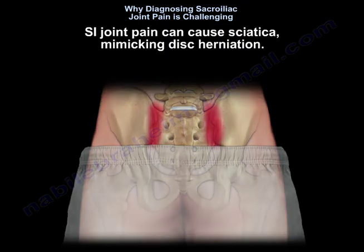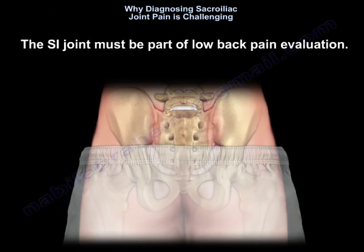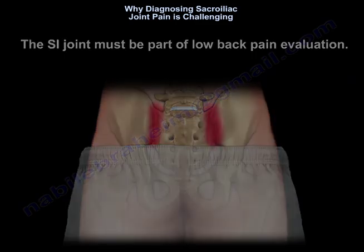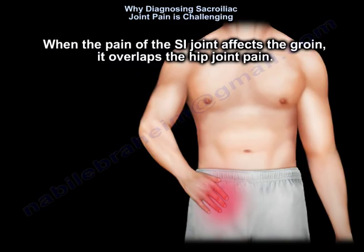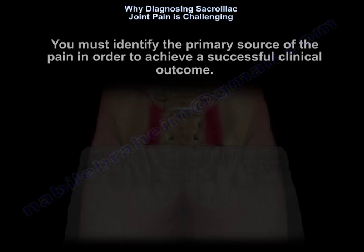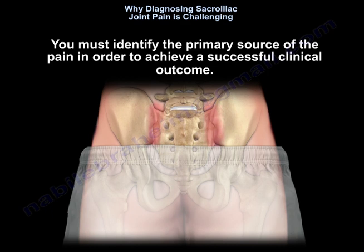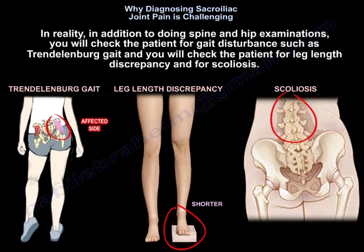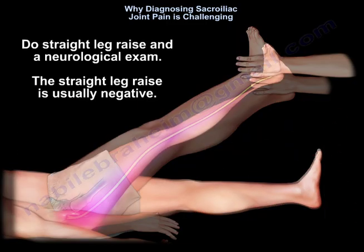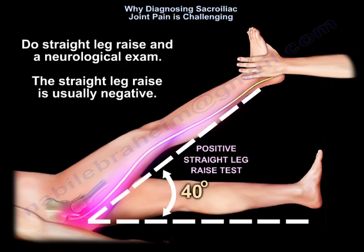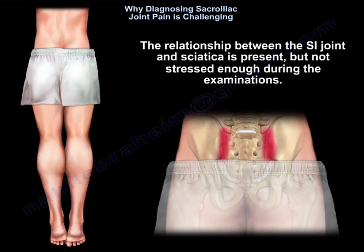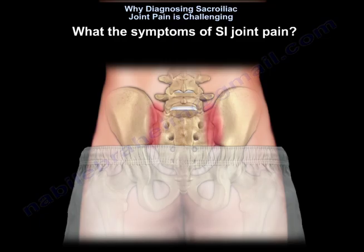Sacroiliac joint pain can cause sciatica mimicking disc herniation, so the sacroiliac joint must be part of every low back pain evaluation. When SI joint pain affects the groin, it overlaps with hip joint pain. You must identify the primary source of the pain to achieve a successful clinical outcome. In addition to spine and hip examinations, check the patient for gait disturbance such as Trendelenburg gait, leg length discrepancy, scoliosis, straight leg raise, and a neurological exam. The straight leg raise is usually negative in SI joint pain.